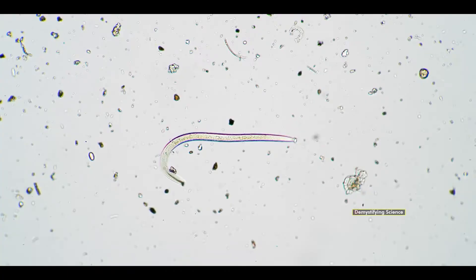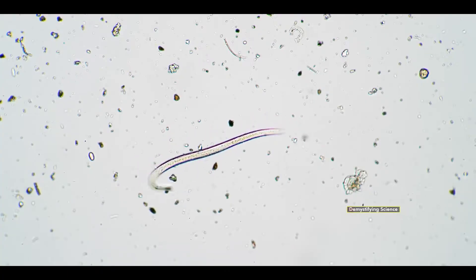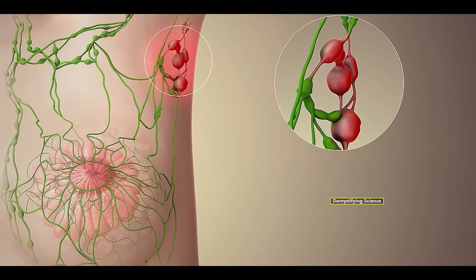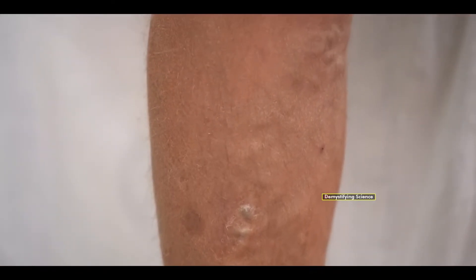Roundworms primarily damage lymph nodes in our arms, legs, and genital areas, leading to swelling in these regions, which can be quite painful.